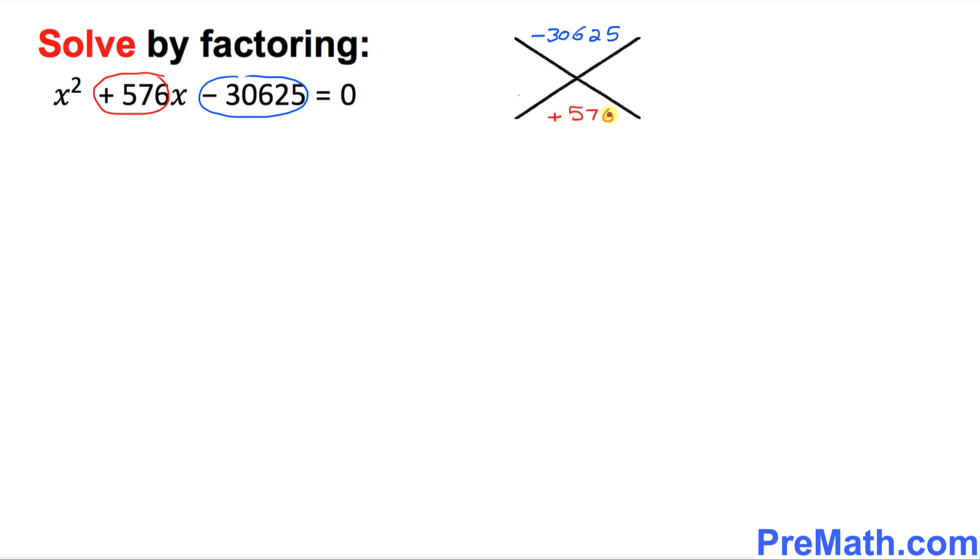Now our next problem is we need to find the factors of this 30625. Don't worry about this negative sign, we'll take care of it later on. Let me show you how to find the factors. Let me write down somewhere here 30625. I want you to focus on this thing: the last two digits are 25, that means this number is divisible by 25.